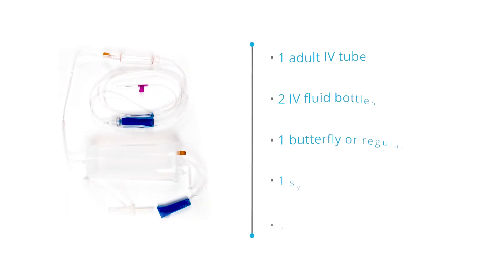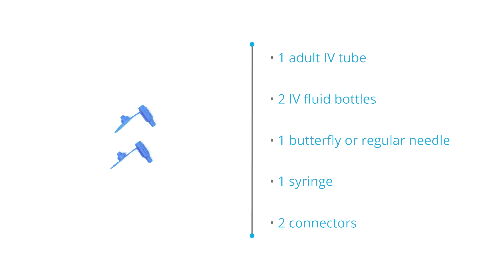The IV practice arm includes one arm with two clips, metal stand, one adult IV tube, two IV fluid bottles, one butterfly or regular needle, one syringe, and two connectors.